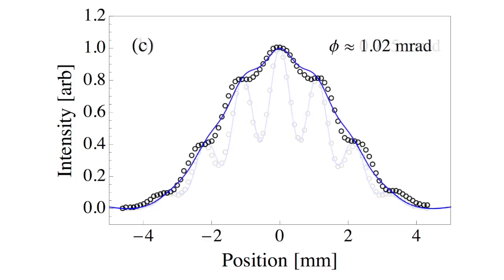As the size of the source increases further, the visibility passes through a minimum and then increases.